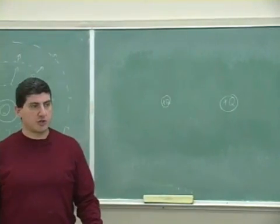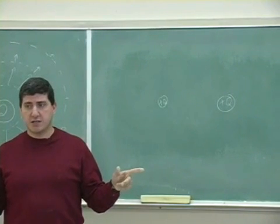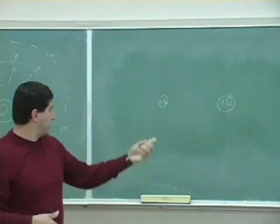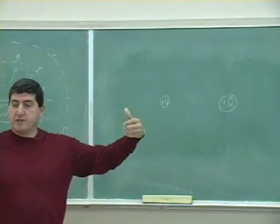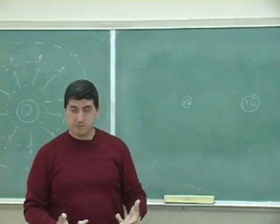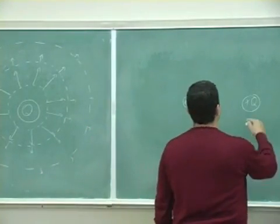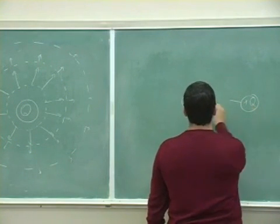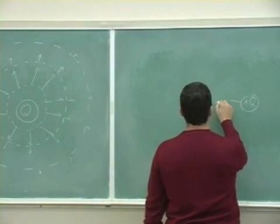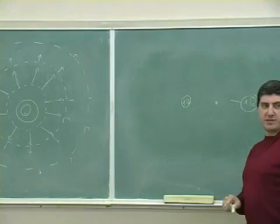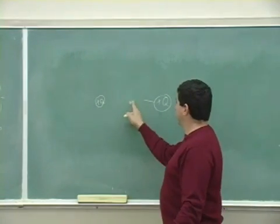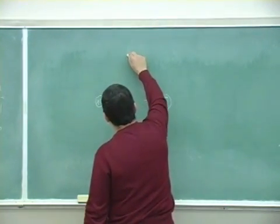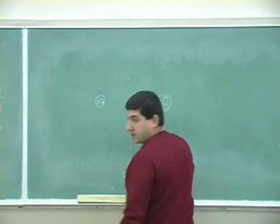Consider two plus charges. Since they're both positive, field lines can't go from one into the other — they have to come out of both. Somewhere right in the middle, the electric field is going to be zero because each charge pushes equally. So there's an asymptotic line right there in the middle.